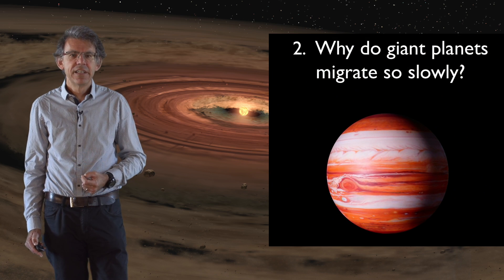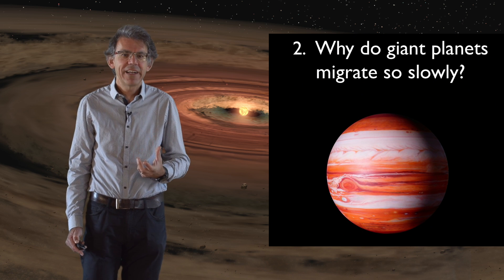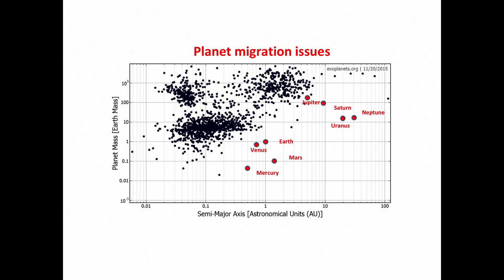A second big mystery is why giant planets seem to migrate more slowly than our current theories predict. This diagram shows extrasolar planets known to date, with the semi-major axis — the size of their orbit — on the horizontal axis, and the planet mass on the vertical axis. Each black dot is a known extrasolar planet, and the red dots show the solar system planets for comparison.